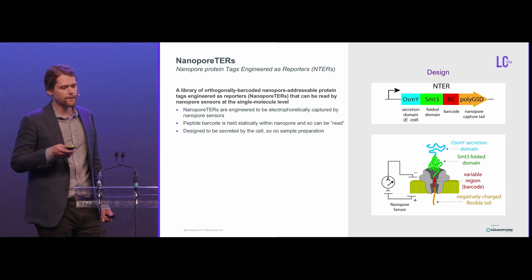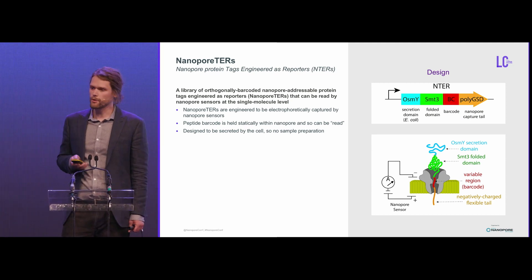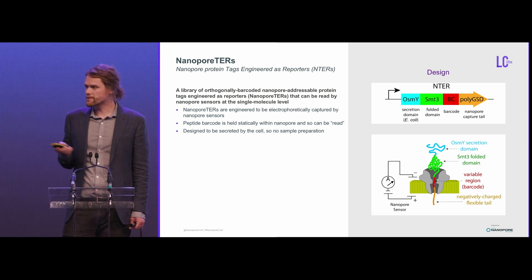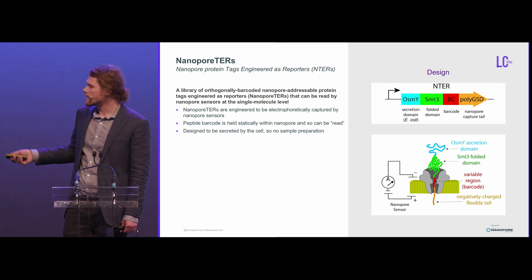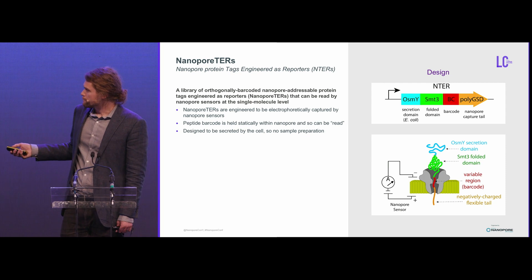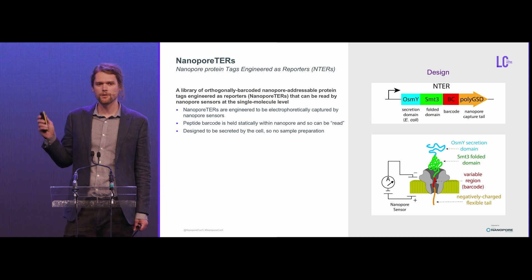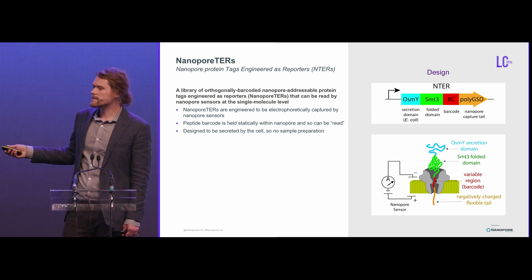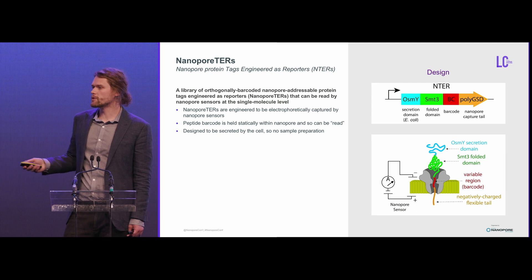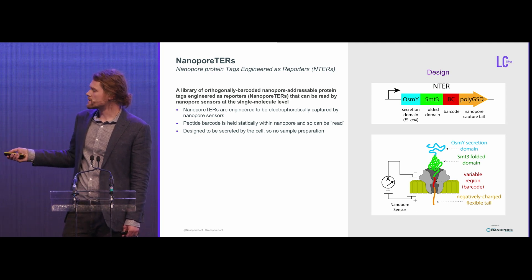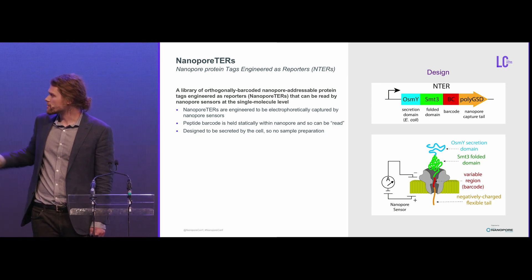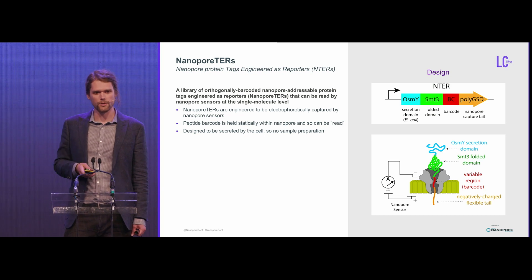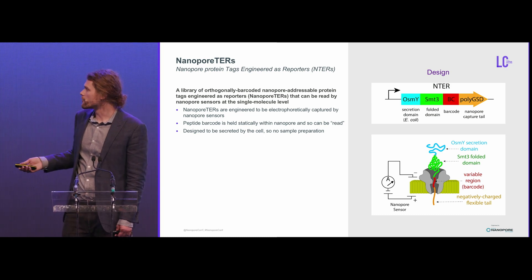Nanoporters are a library of orthogonally barcoded, nanopore-addressable proteins — protein tags engineered as reporters. This is the design of them at the gene level, and what they look like when actually being read by a nanopore sensor. The key is they have a charged tail, which allows them to be electrophoretically captured within a nanopore, and then they stick there because the folded domain does not allow complete translocation. The signal observed is dependent upon that variable barcode region of the protein — you can change the amino acid sequence of that portion and manifest different signals in your raw data.